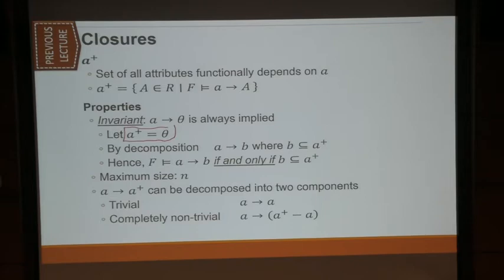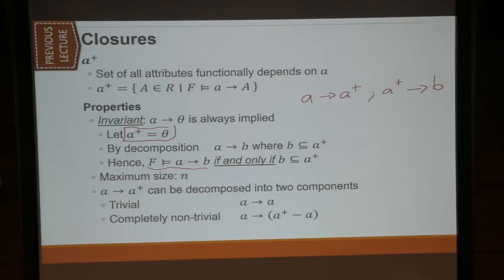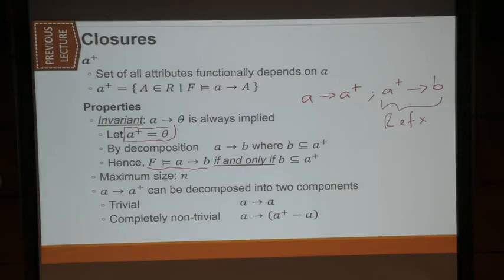In particular, we know that A to B where B is a subset of A+ is always implied. By transitivity of this, A to B where B is a subset of A+ is always true. This is reflexivity. The maximum size of θ is definitely going to be just N, where N is the number of attributes. So this is a much more compact algorithm.